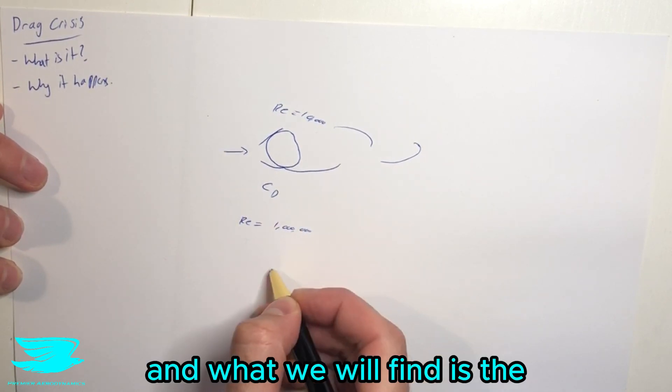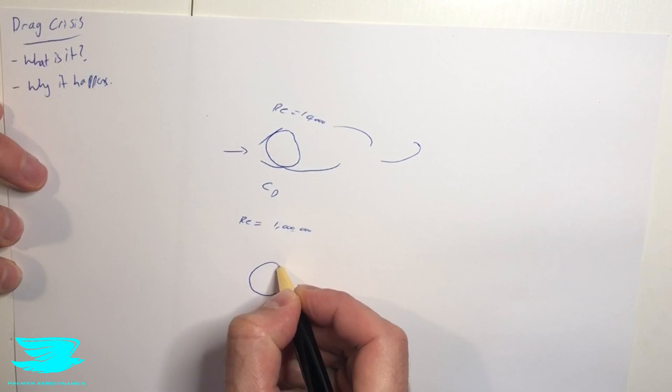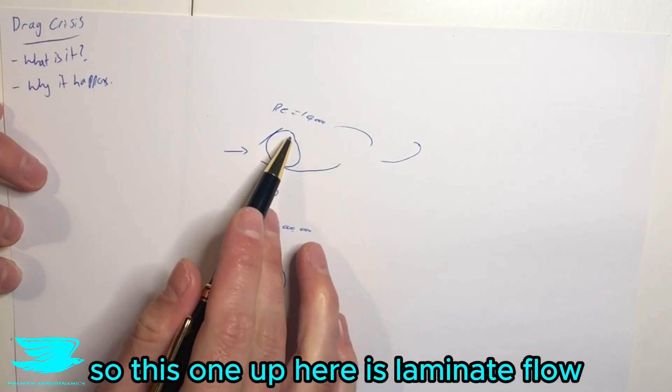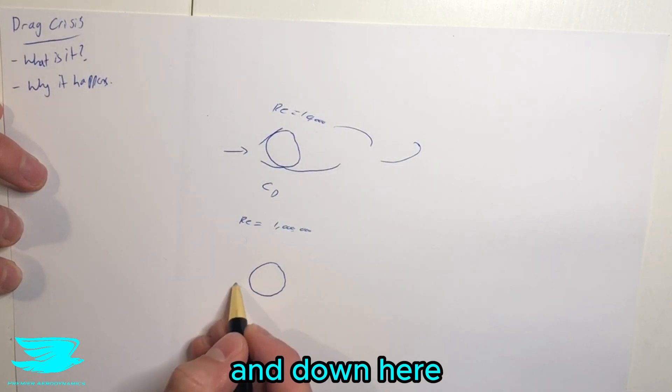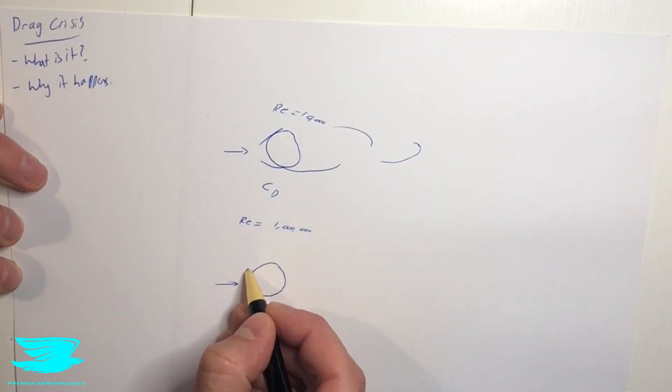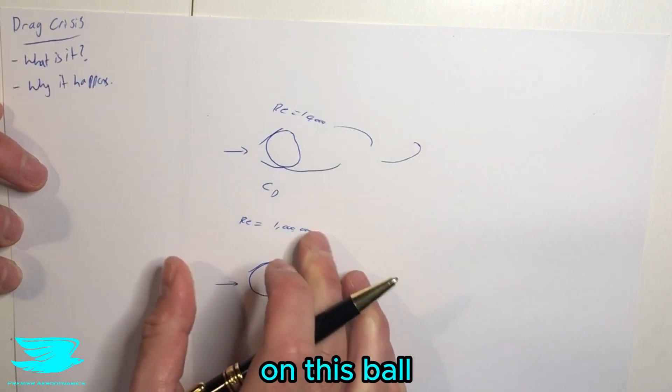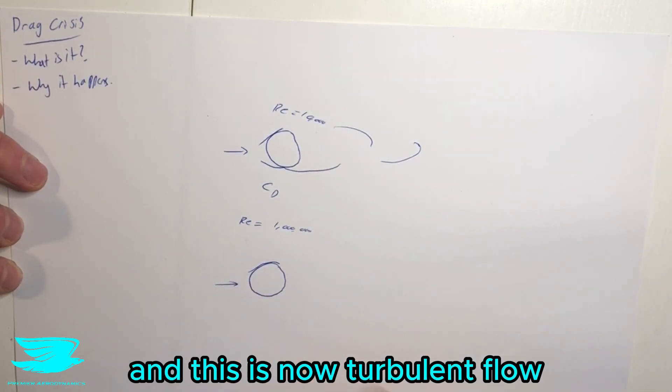And what we will find is that the point at which the flow separates will be significantly different. So this one up here is laminar flow. And down here now, we have the flow coming around and it'll start to separate much further back on this ball. And this is now turbulent flow.